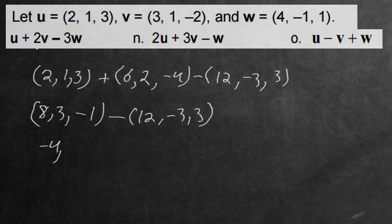3 subtract negative 3 is going to be 3 add 3, because the negatives cancel out. So we have positive 6. Negative 1 subtract 3 is going to give us negative 4 here, and this is the end answer. This is the resulting vector from this transformation here.